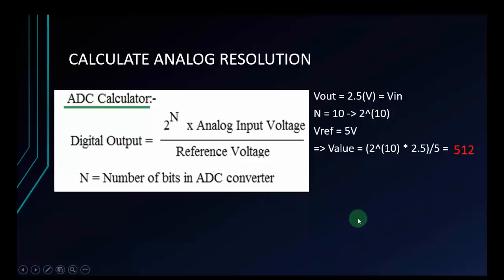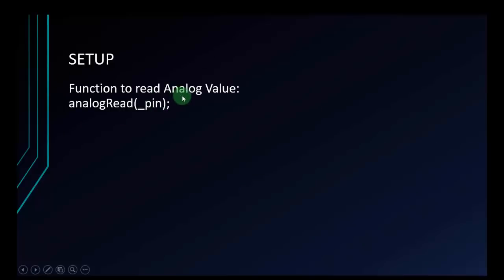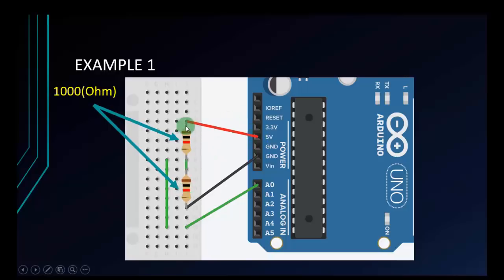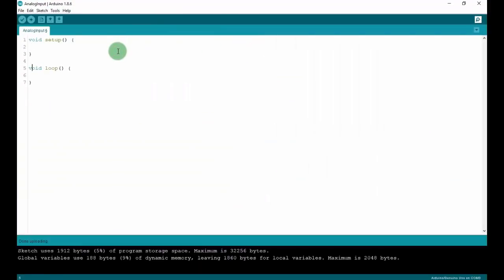When we input 2.5 volts to the Arduino, we can get 512. We have a function to read the analog value — we will use analogRead() to read the value from the pin. The analog pins do not need to be set with pinMode INPUT like digital pins. We just need to call analogRead(pin). To display the value in the serial monitor, we set up Serial.begin(9600) and use Serial.println() to print the value on a new line.